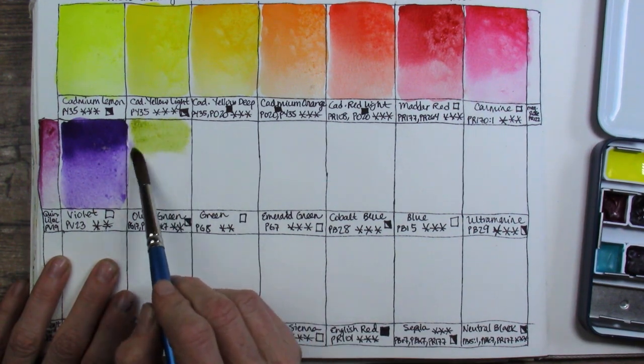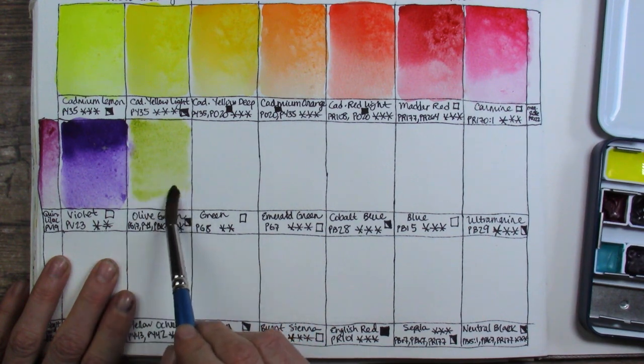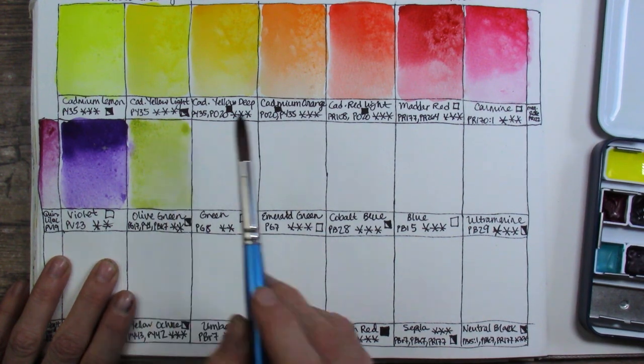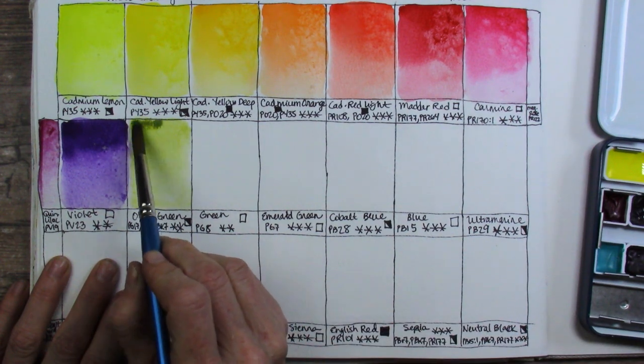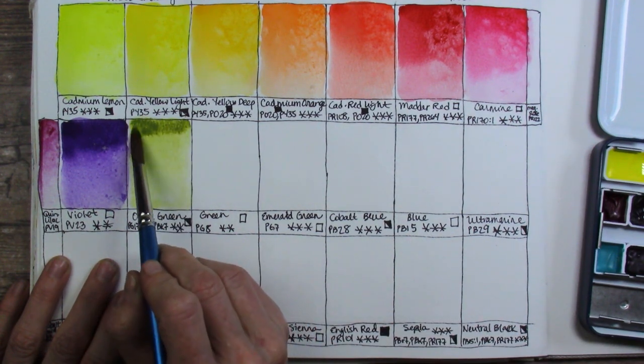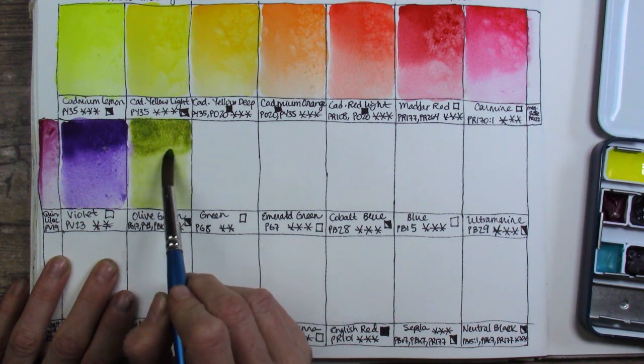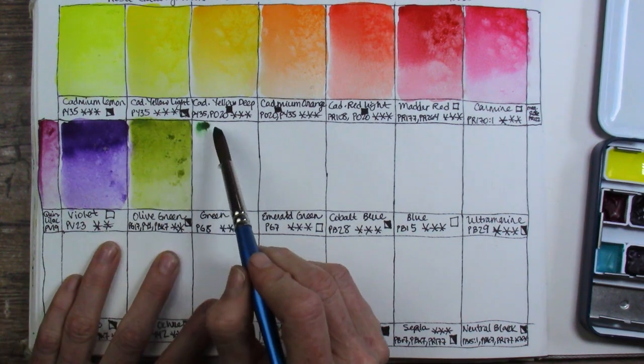Next olive green. Three pigments PG17, PY1, and PBK7 with only two star lightfast rating and it is semi-opaque. It's kind of a neat color. I don't ever mind having olive greens on my palette.